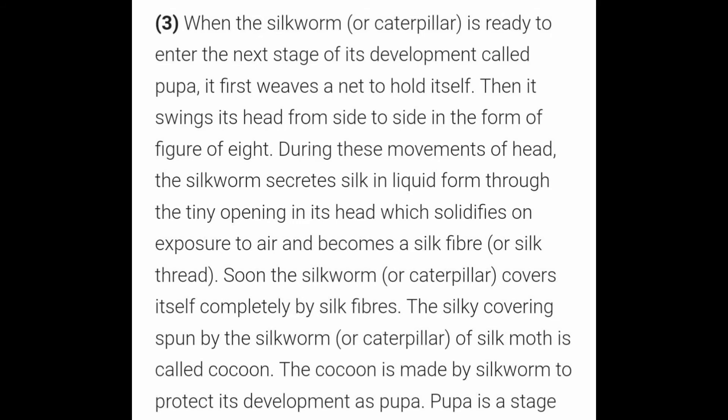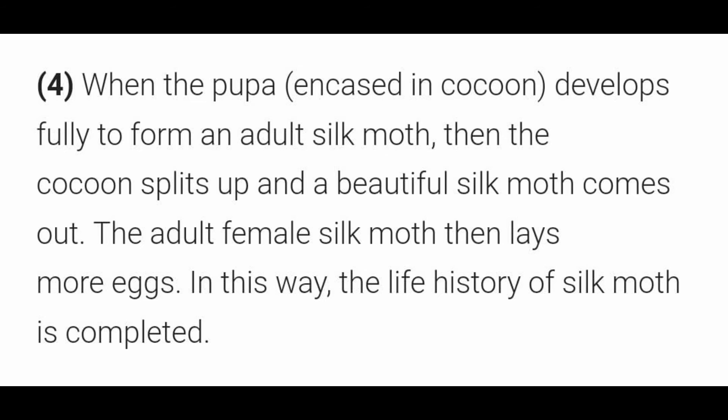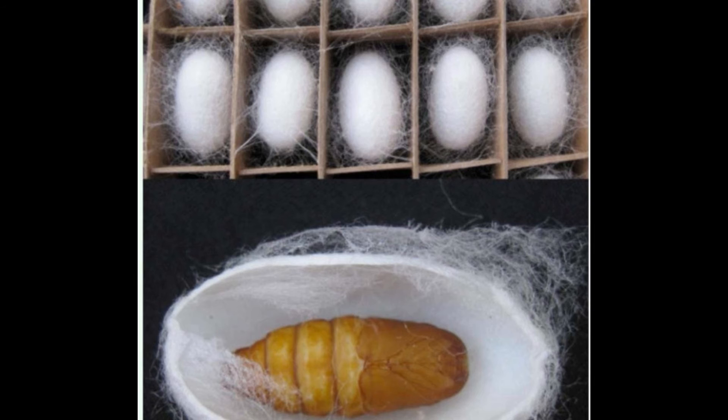The caterpillar covers itself with this silk fiber, and this covering is called a cocoon. The cocoon acts like an envelope that protects the caterpillar during its development. The caterpillar continues to develop inside the cocoon and eventually forms an adult silk moth. The last stage is when the cocoon breaks and the adult silk moth emerges.